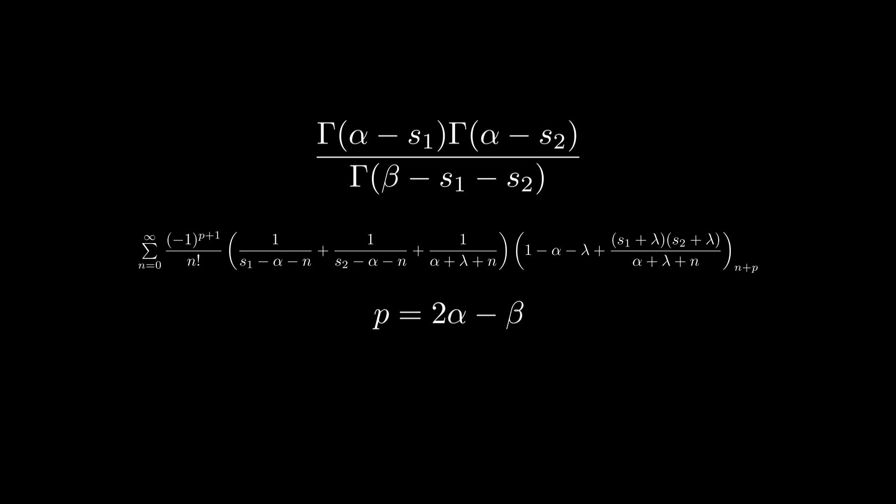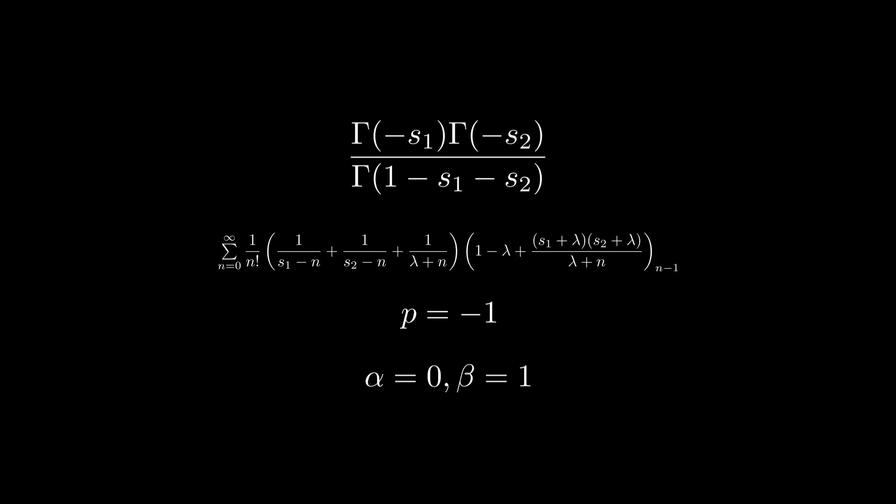Plugging in alpha equals 0 and beta equals 1, we have the value of Pi as minus 1 and substituting gives the following expression.